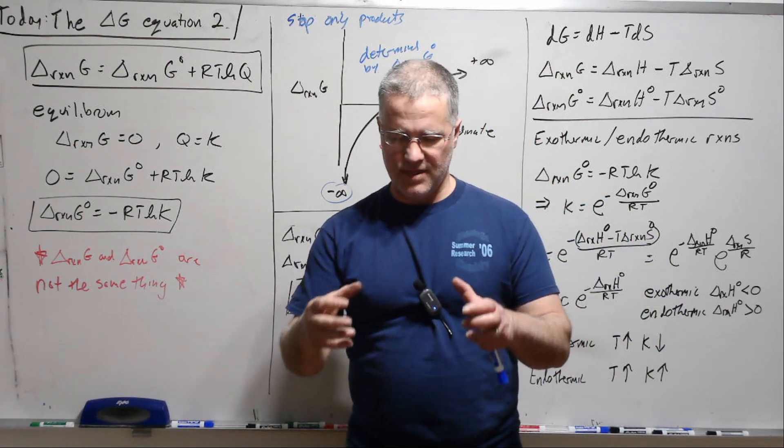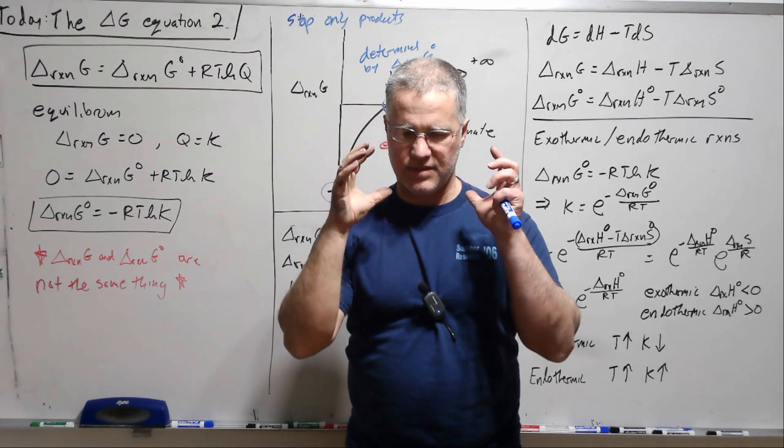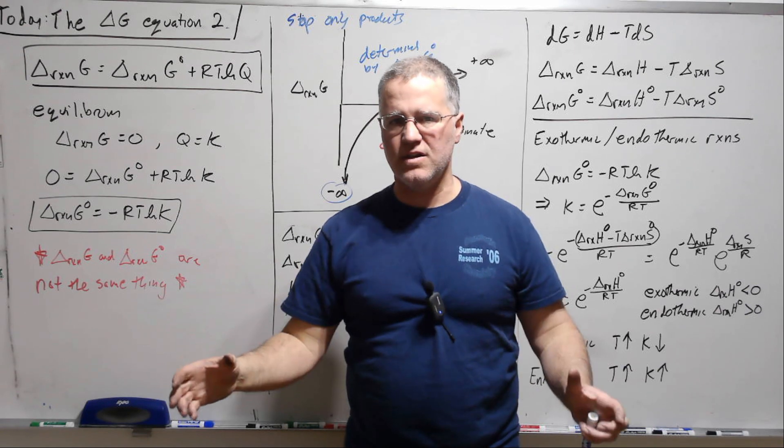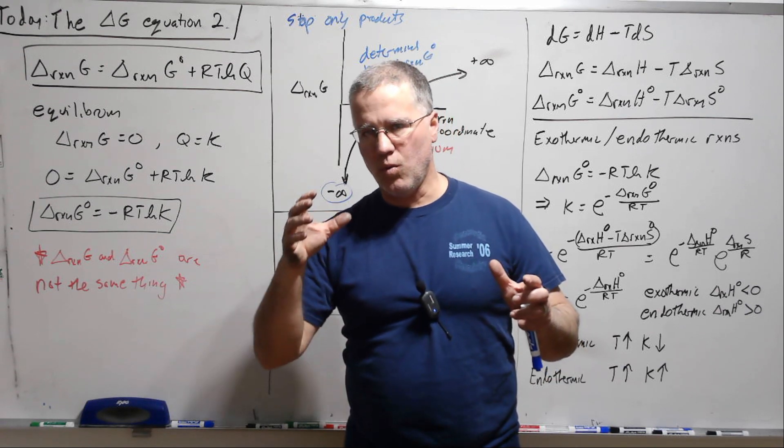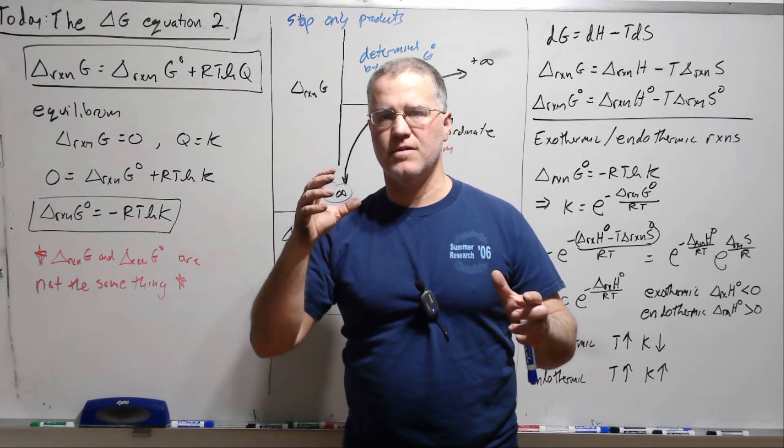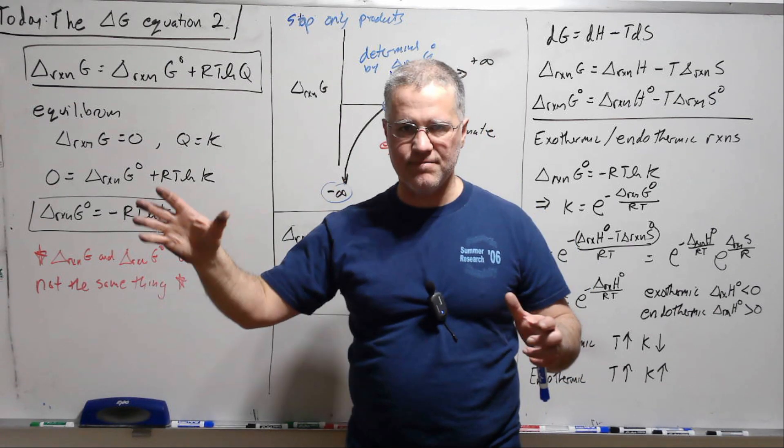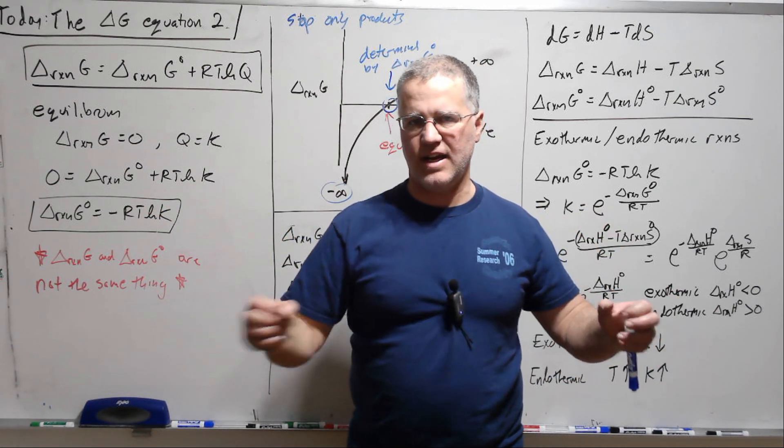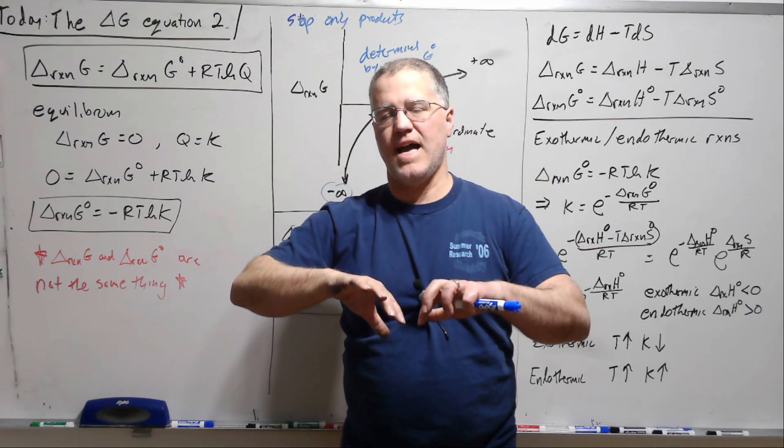That would be that if we set the lab at one atmospheric pressure, 298 Kelvin, and then we take one molar of A, one molar of B, one molar of C, one molar of D. So everything's at one molar concentration, and we mix that.